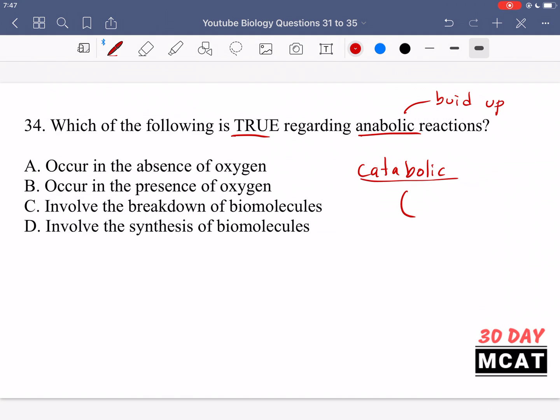build up and then catabolic reactions break down. So metabolism consists of anabolic reactions and catabolic ones. Anabolic ones, we're asked what is true regarding them. You should know that they're processes in the body which build up molecules.